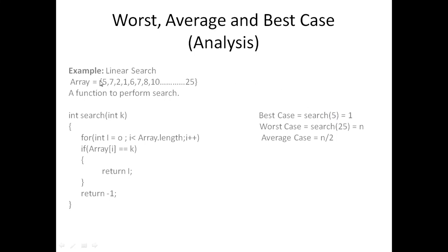The best case is when the element we are searching for is at the zeroth index. For example, if we search for 5, we find it at the first position. The time complexity will be O(1) because at the very first comparison we get our element.